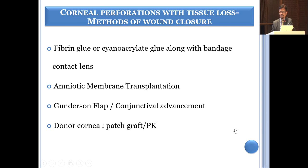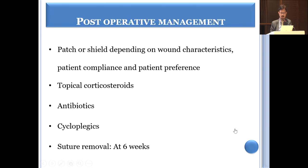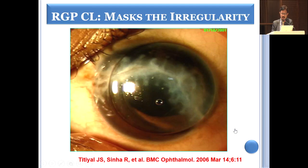If there is tissue loss, do not attempt to oppose corneal tissue by creating folds or bends in the cornea as this causes phthisis. For small tissue loss, fibrin glue or cyanoacrylate glue with a bandage contact lens, or amniotic membrane transplant, can be used. For larger tissue loss, a patch graft is needed. After repair, a protective shield should be placed in children to prevent eye rubbing and preserve the repair.